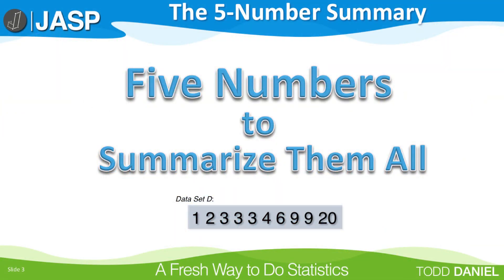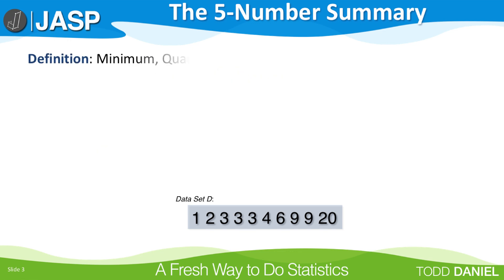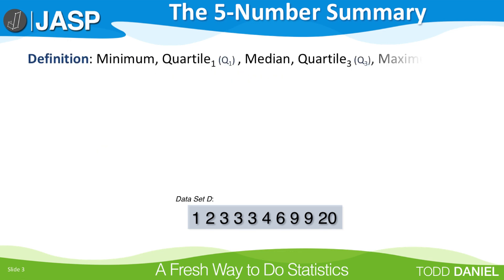As you might gather from the name, the five-number summary consists of five numbers that summarize your data set. The five numbers are the minimum, quartile one, median, quartile three, and the maximum.